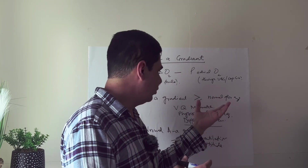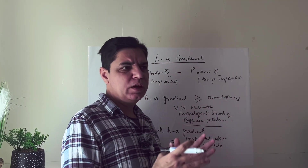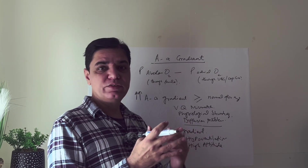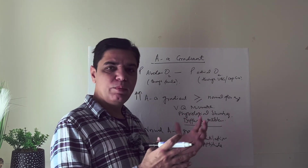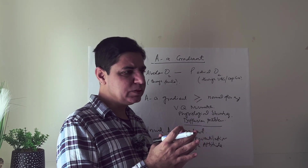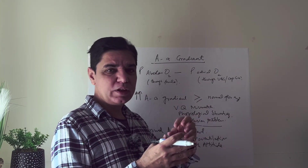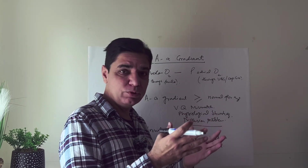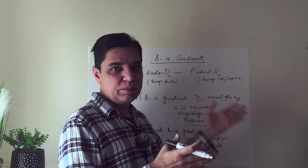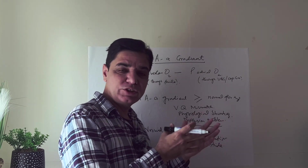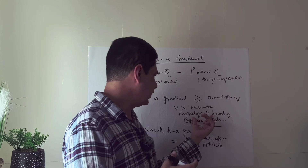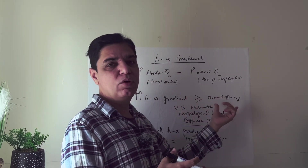The second cause of increased AA gradient is physiological shunting. Anatomical shunting occurs in cardiac lesions with right-to-left shunts. Physiological shunting typically happens in pneumonia and ARDS, where alveoli are filled with mucus or debris. Air cannot diffuse because alveoli are filled with fluid or mucus, but blood still passes through those alveoli without getting oxygenated — it is shunted back to the left side of the heart unoxygenated.